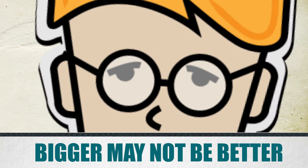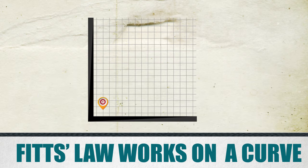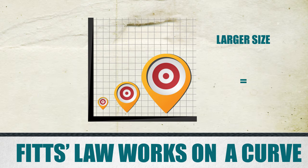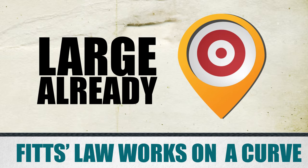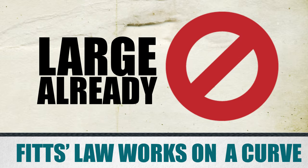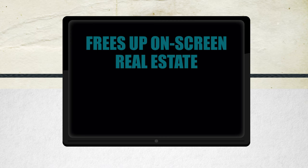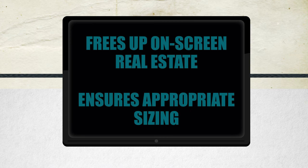This might lead a designer to think that bigger buttons are always better. However, that isn't always the case. Fitts' Law is a curve, which means that smaller objects are easier to click if they're made larger. However, larger objects are already large, so if they're made larger yet, they aren't any easier to click. Because of this curve, the benefits of increased size begin to decrease. This is actually good news for designers, because it frees up more on-screen real estate and ensures on-screen objects are appropriately sized for their intended use.